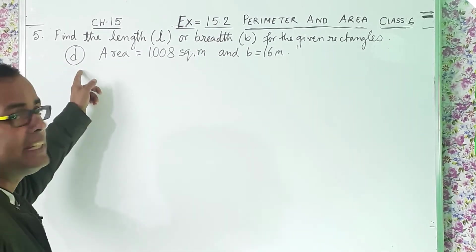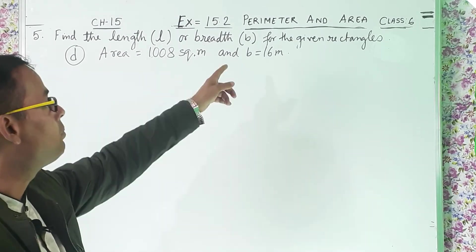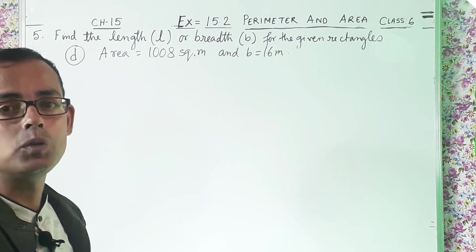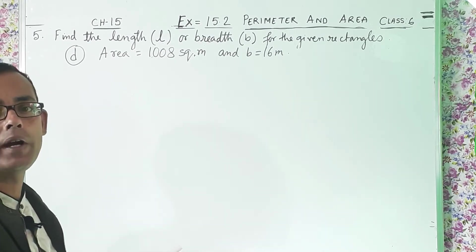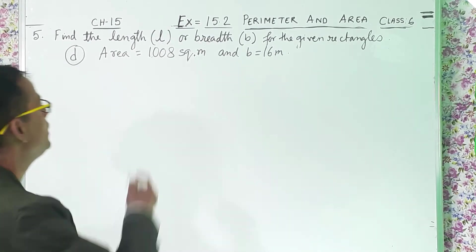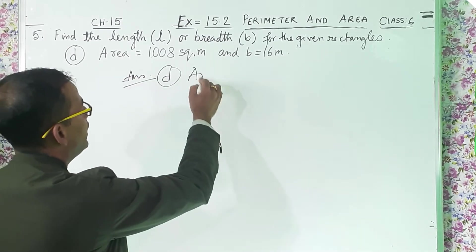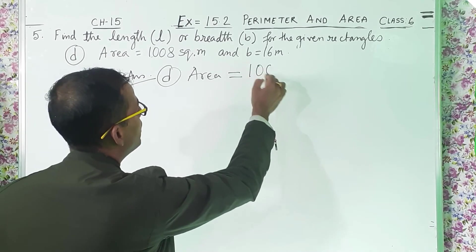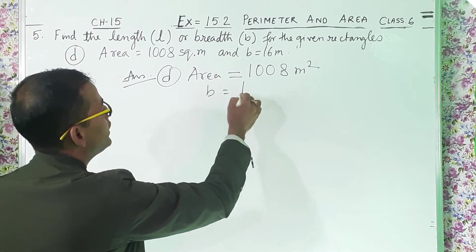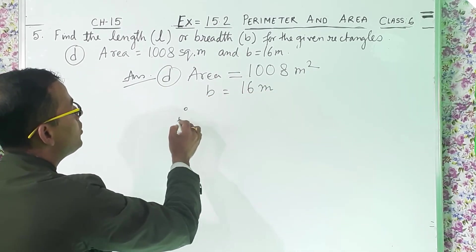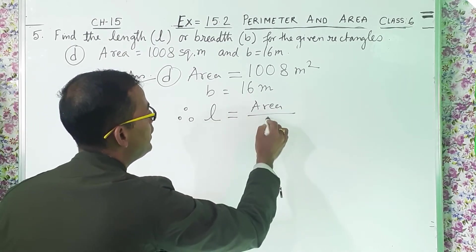Question number 5D: area equals 1008 square meters and B equals 16 meters. That means breadth equals 16 meters and area is 1008 square meters, so we have to find out the length. Answer D: area equals 1008 meter square and B equals 16 meters. Therefore L equals area divided by B.